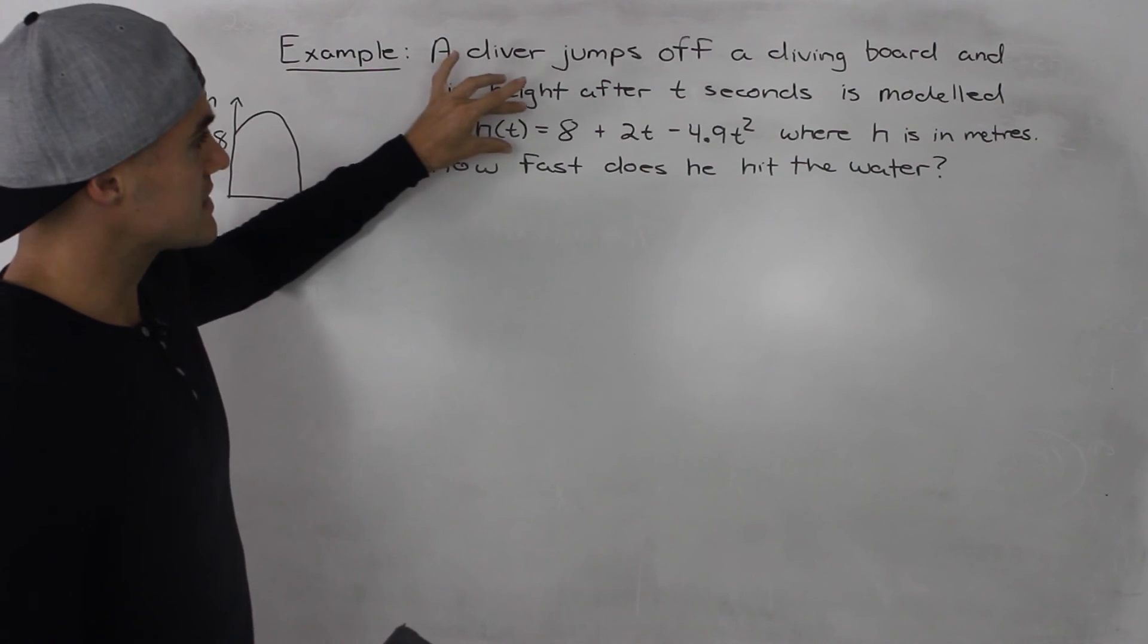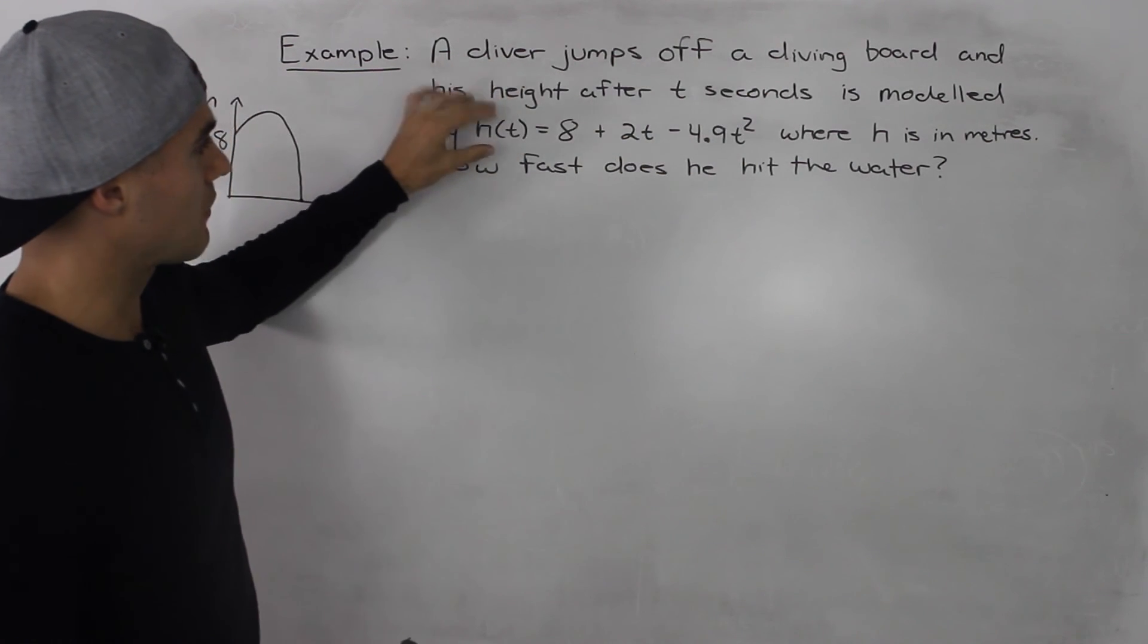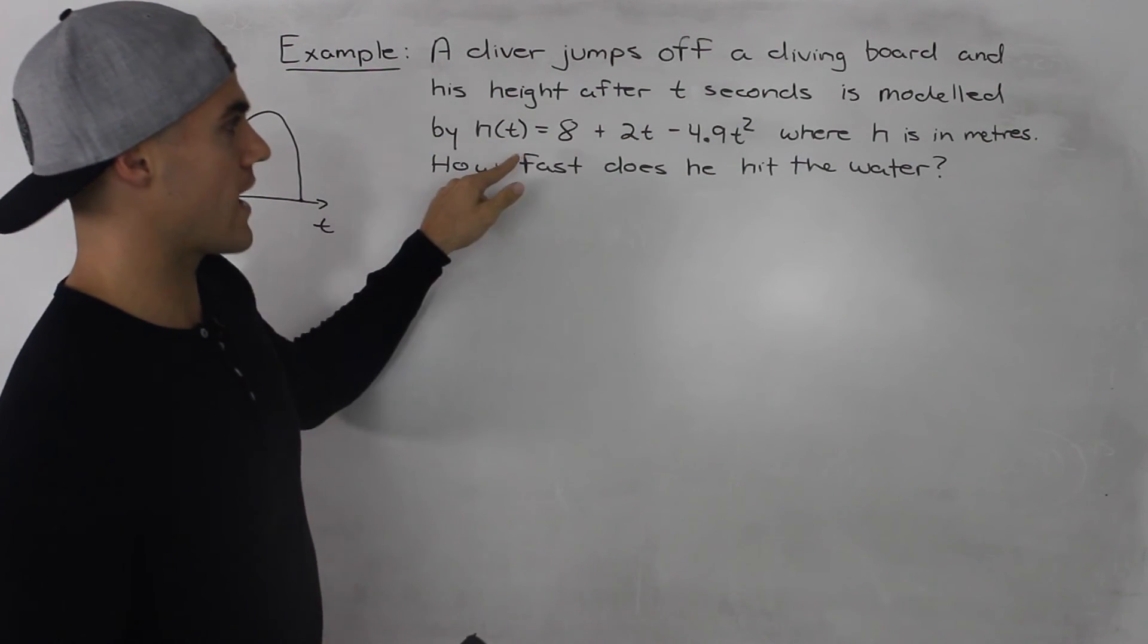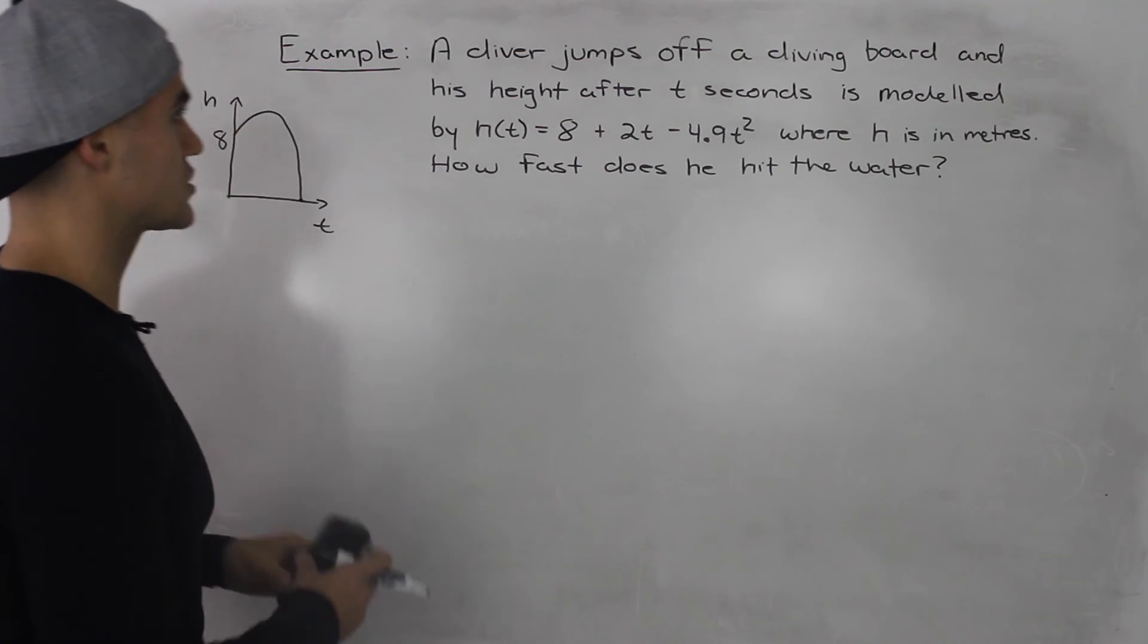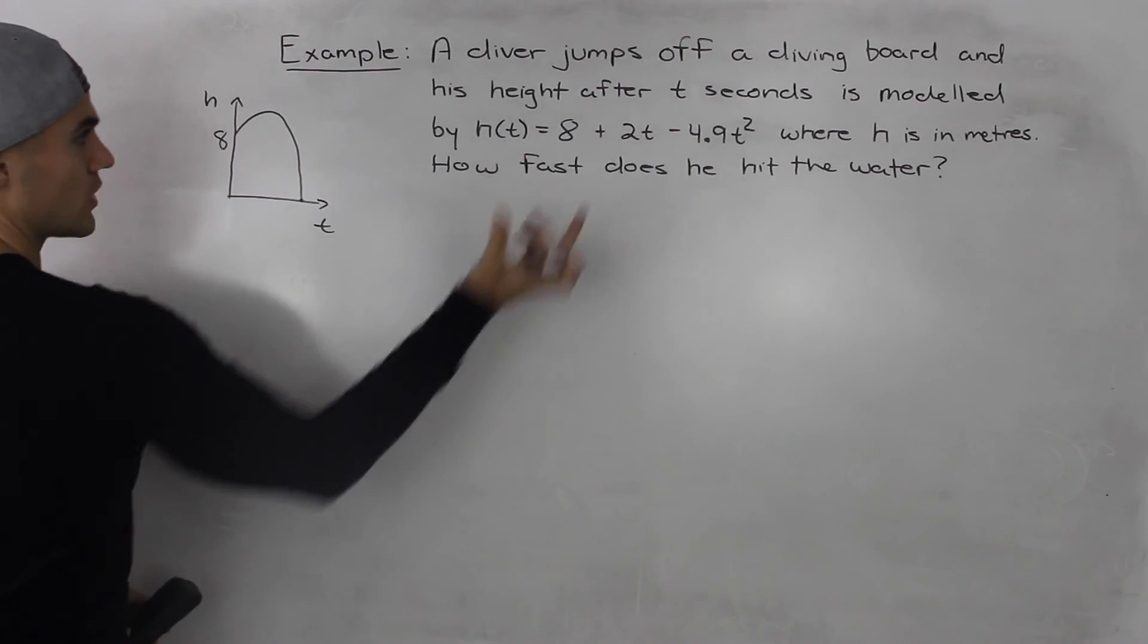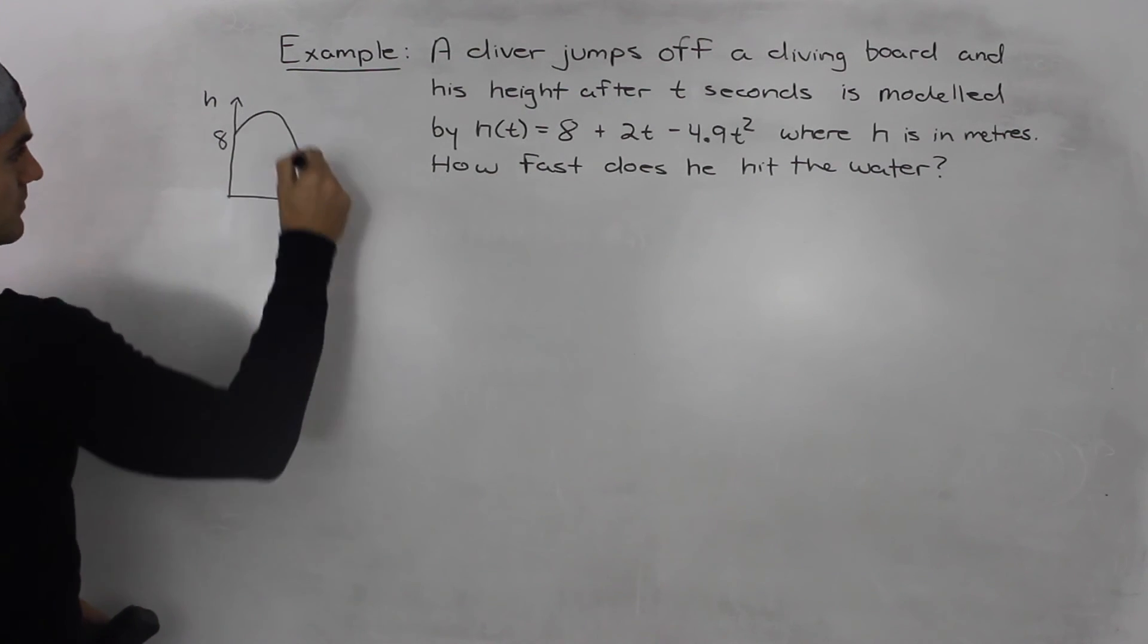If you notice this function that we're given is a quadratic with a negative leading coefficient so it's going to be opening down. So this scenario and this quadratic equation looks something like this.